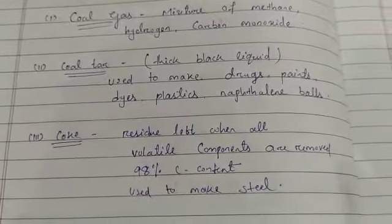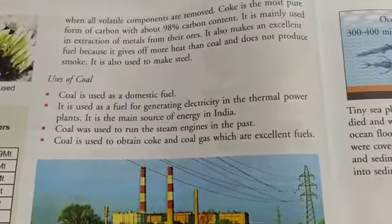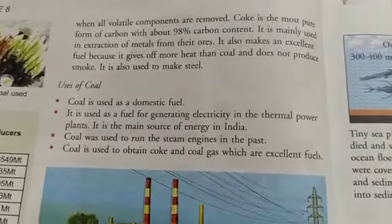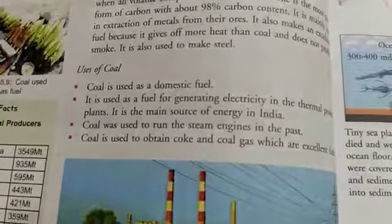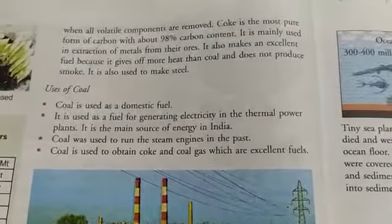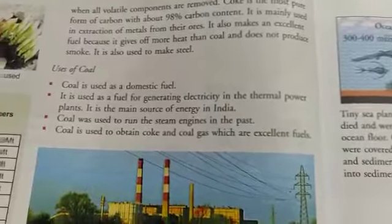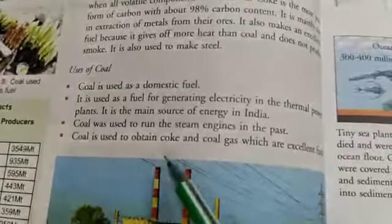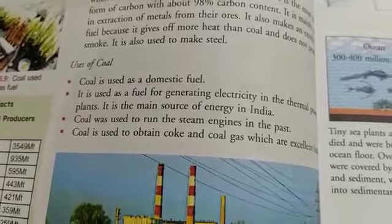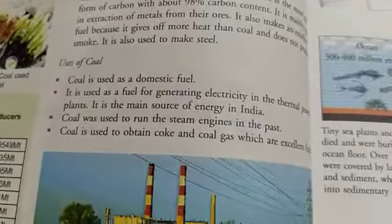Now let us discuss the uses of coal. Coal is used as a domestic fuel and as fuel for generating electricity in thermal power plants. It is the main source of energy for electricity generation in India. In the past, coal was used to run steam engines. Coal is also used to obtain coke and coal gas through destructive distillation, and these are excellent fuels.